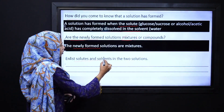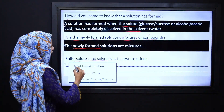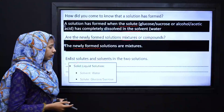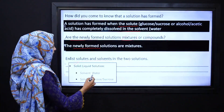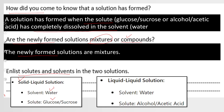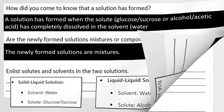If we identify the solute and solvent in our solutions: the first case is solid dissolved in liquid — solvent is water, solute is glucose or sucrose. For the liquid-liquid solution, solvent is water, whereas solute is alcohol or acetic acid.